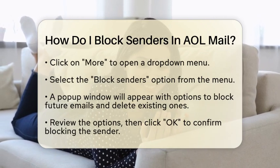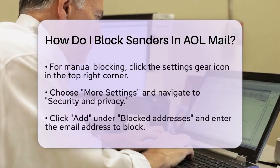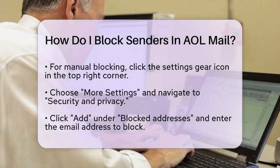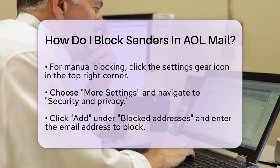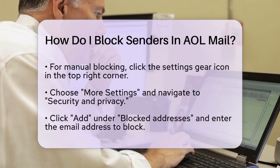If you prefer to block senders manually, there is another method. Click on the settings gear icon located at the top right corner of the AOL Mail interface. From there, select More Settings. Navigate to the Security and Privacy section, and you will see an option to add under Blocked Addresses. Enter the email address you want to block and click Save.